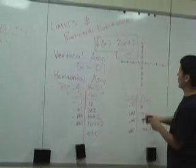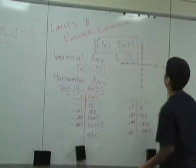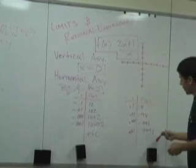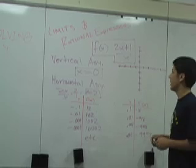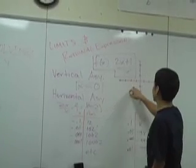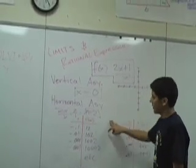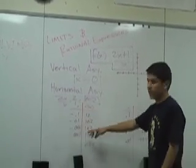Now let's graph that. You have your vertical asymptote at x equals zero and your horizontal asymptote at y equals 2. To see which way the curve goes, plug in numbers closest to zero — like negative 0.1, negative 0.01, getting really close to zero from the negative side. As you can see, the values get bigger, so from the negative side it goes off to infinity.